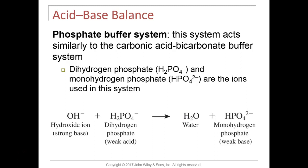If we are alkaline, we don't want to breathe very fast — we don't want to exhale all of our CO2. We want to respire more slowly to retain more CO2 in the blood, which maintains acid in the blood. If we have too much CO2 in the blood we are acidic; if we don't have enough CO2 we are basic.